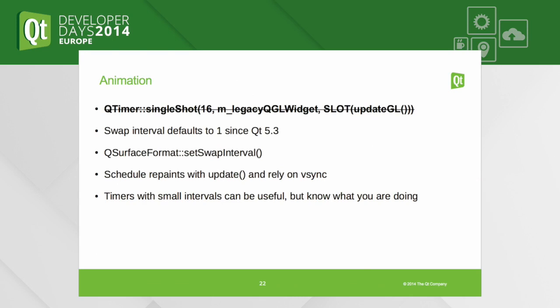Since we are talking about QOpenGLWidget, there's a good chance you want to animate. There's a new topic: swap intervals. A typical line from past Qt OpenGL examples was starting a timer at 60 milliseconds and calling updateGL on QGLWidget. Why is this less than ideal? For one, we don't have updateGL anymore — with QOpenGLWidget we only have update like any other widget — but that's not the real issue.